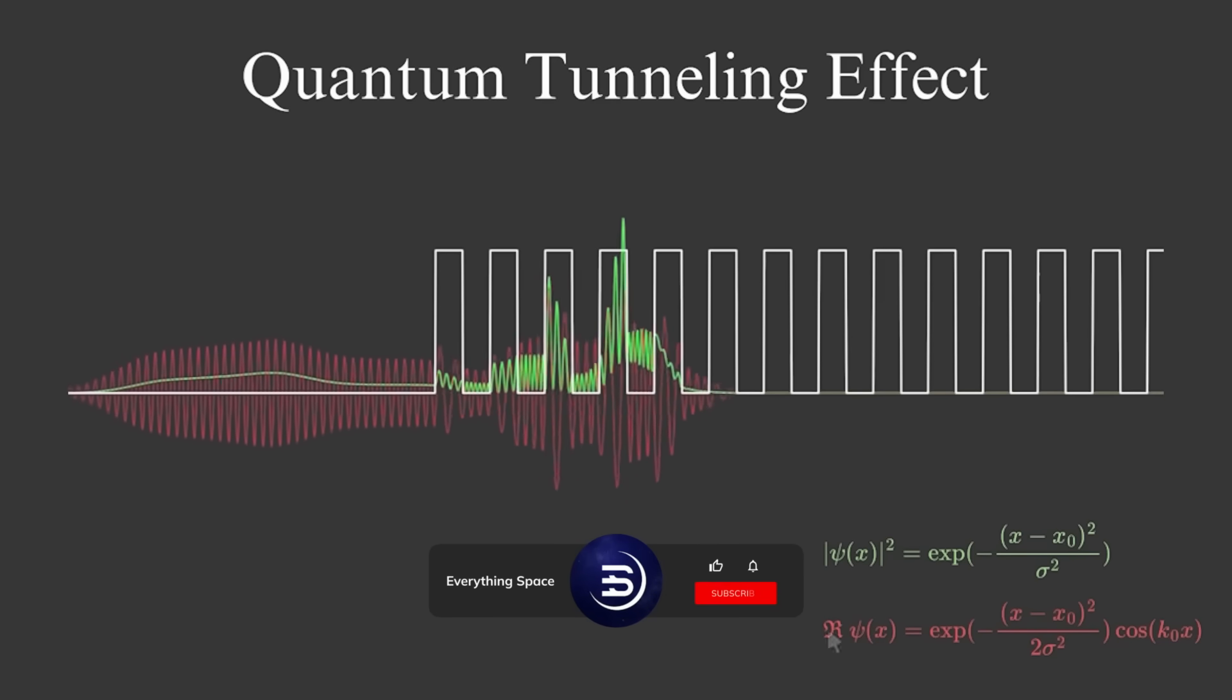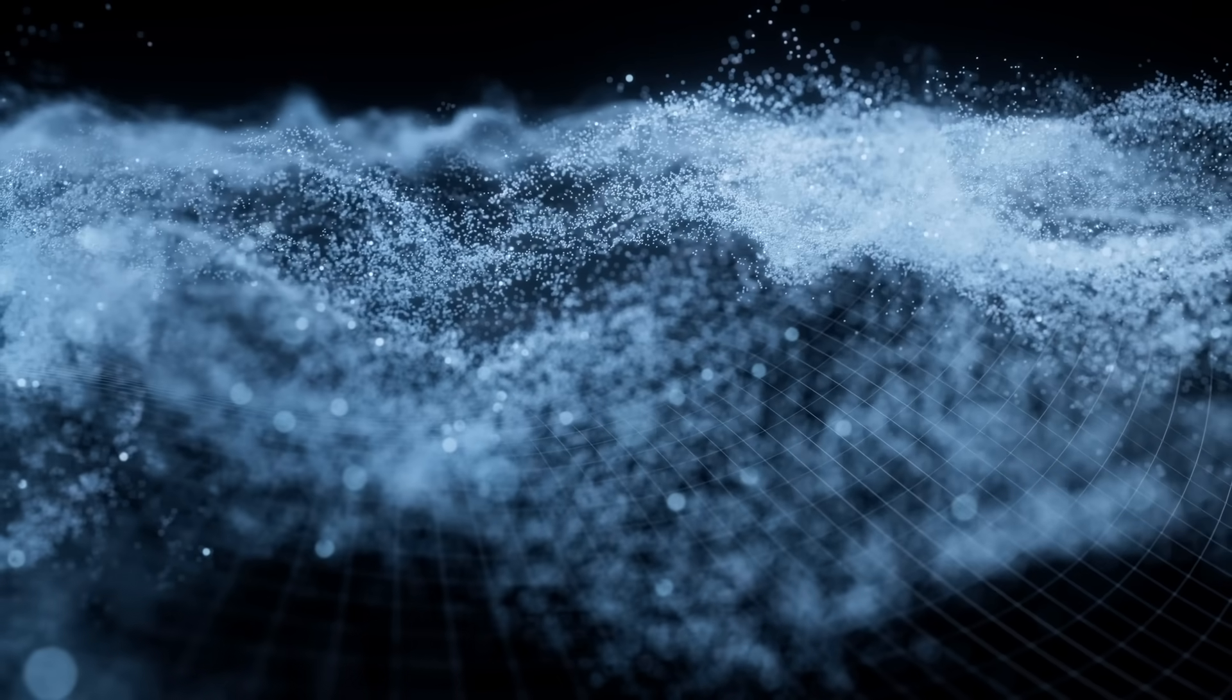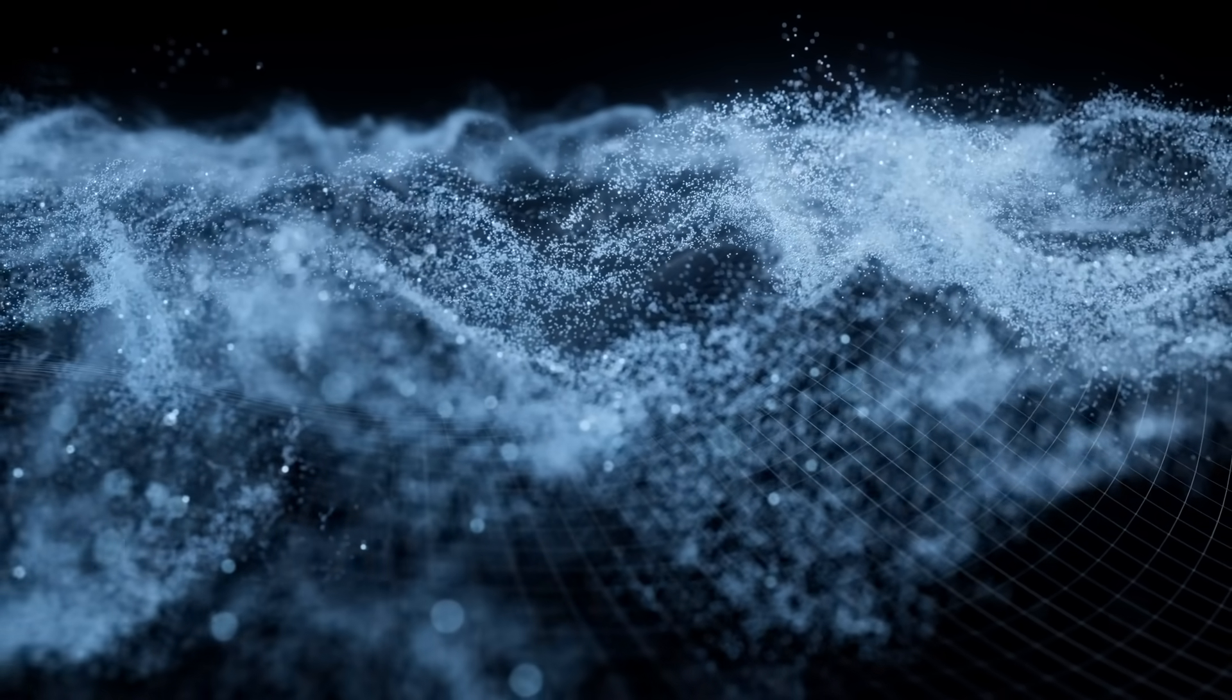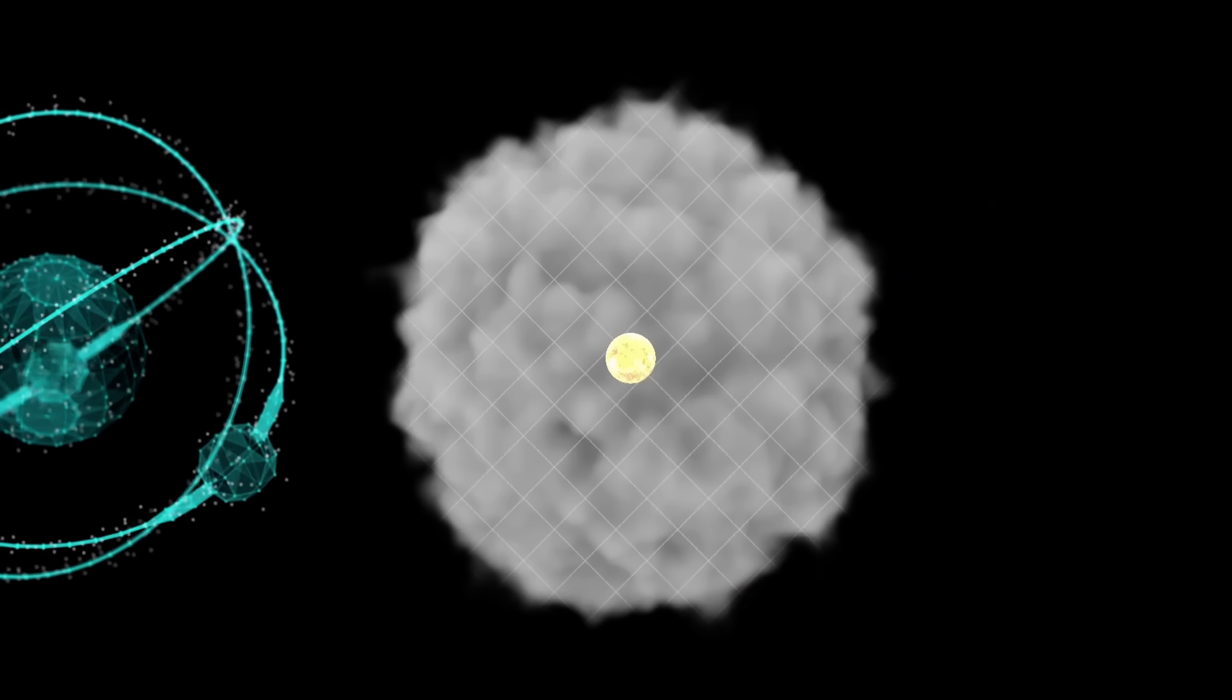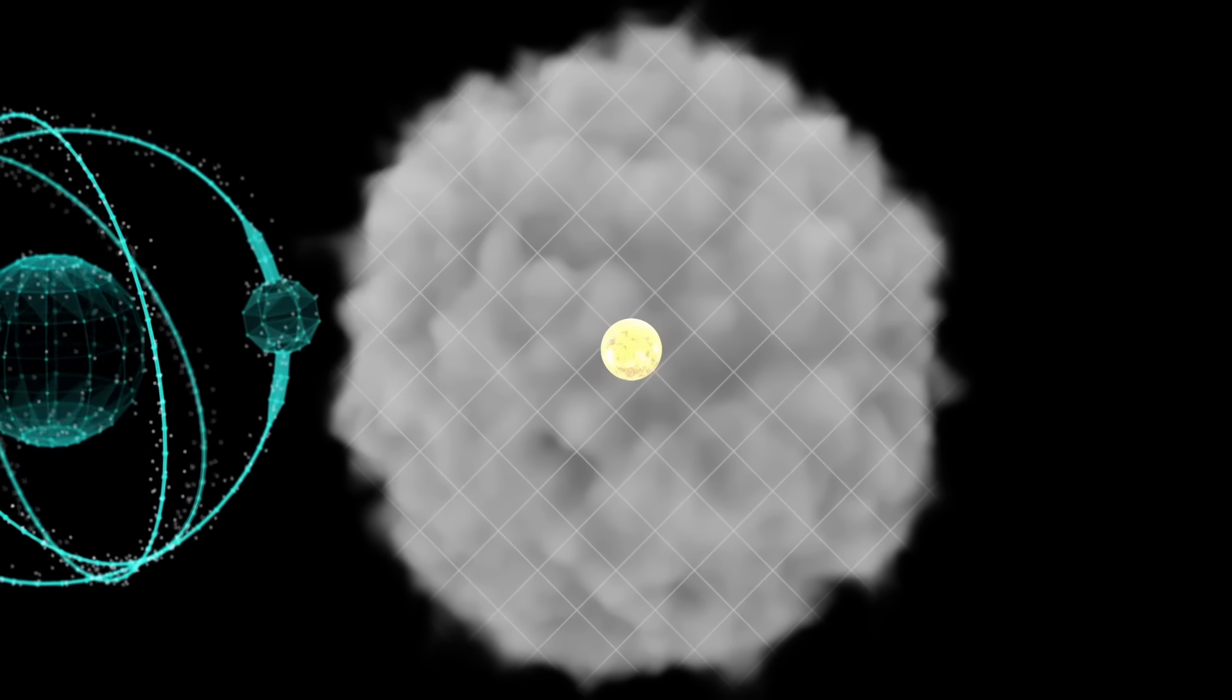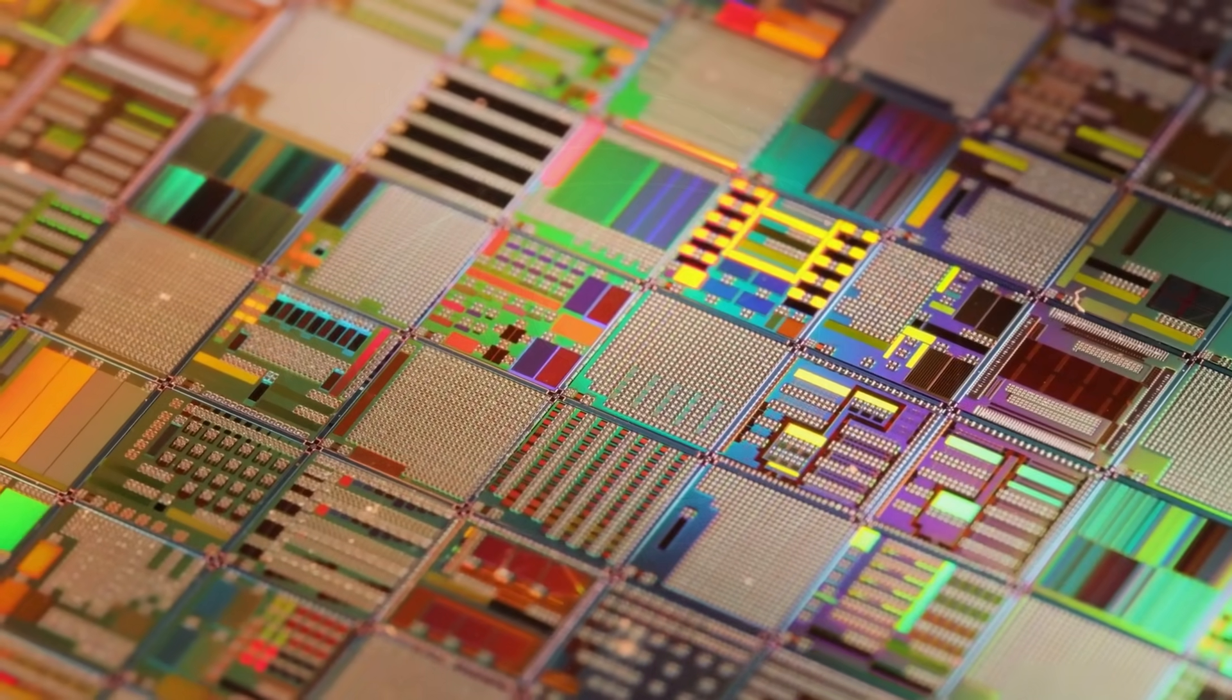This is quantum tunneling. It's one of the strangest phenomenon in all of physics. An electron, trapped inside an atom, doesn't stay perfectly confined. A tiny part of its wave function seeps beyond the barrier, like a ghost slipping through walls. That faint possibility, that leakage of probability, it's not just theoretical, it's real. It's the mechanism that drives nuclear fusion in stars, the decay of radioactive atoms, and even the modern microchips inside your phone.